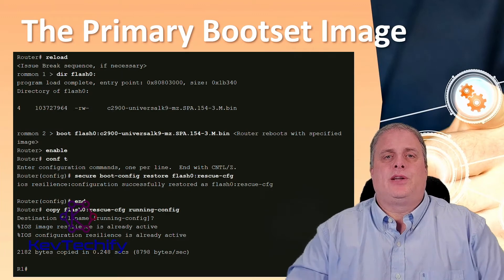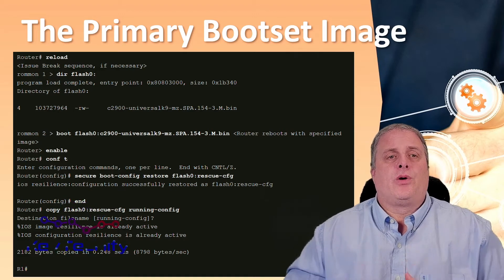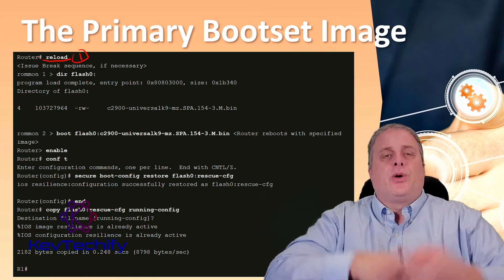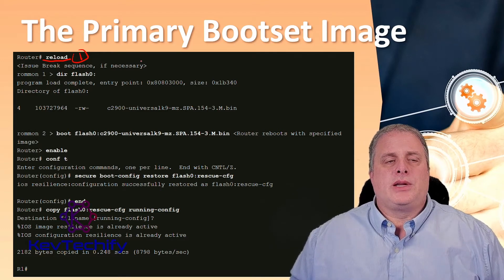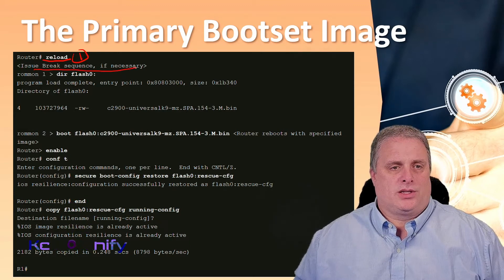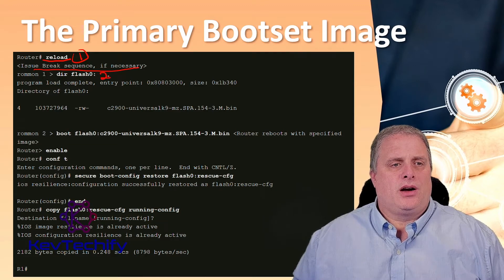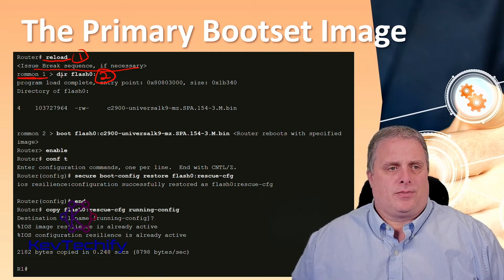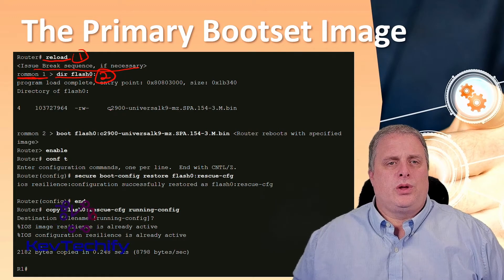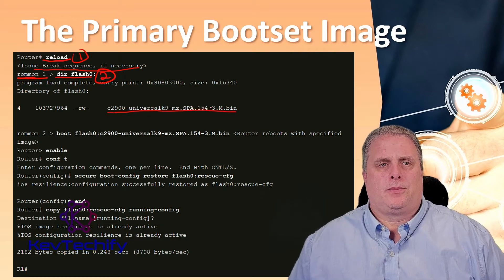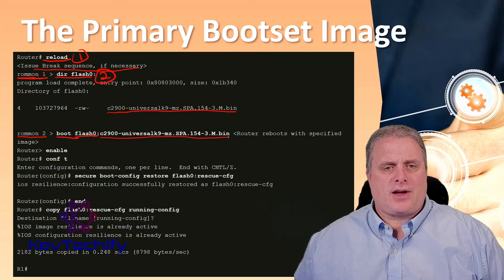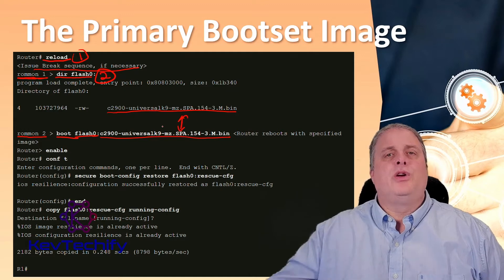To restore a primary boot set from a secure archive after the router has been tampered with, you have to go through five steps. Step one: reload your router — type reload and it's going to reboot. Once it's rebooting, issue your break sequence if necessary. Step two: once in ROM-MON mode, do a directory of your flash, which will show you the secure boot set. Step three: boot the router with the secure boot image. Still in ROM-MON mode, do a boot, specify the storage location, give it the name of the file from the directory, and it will reboot with that specific image.